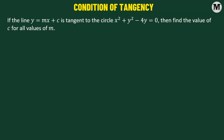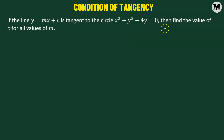If the line y equals mx plus c is tangent to the circle x squared plus y squared minus 4y equals 0, then find the value of c for all values of m. Let us begin.